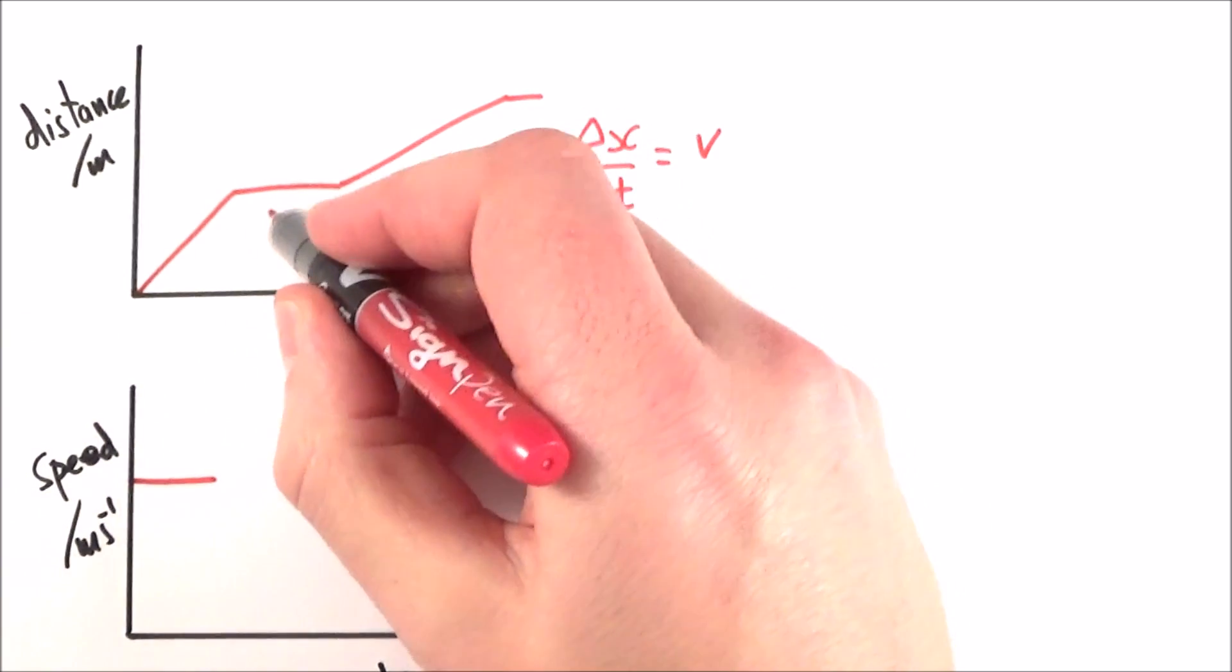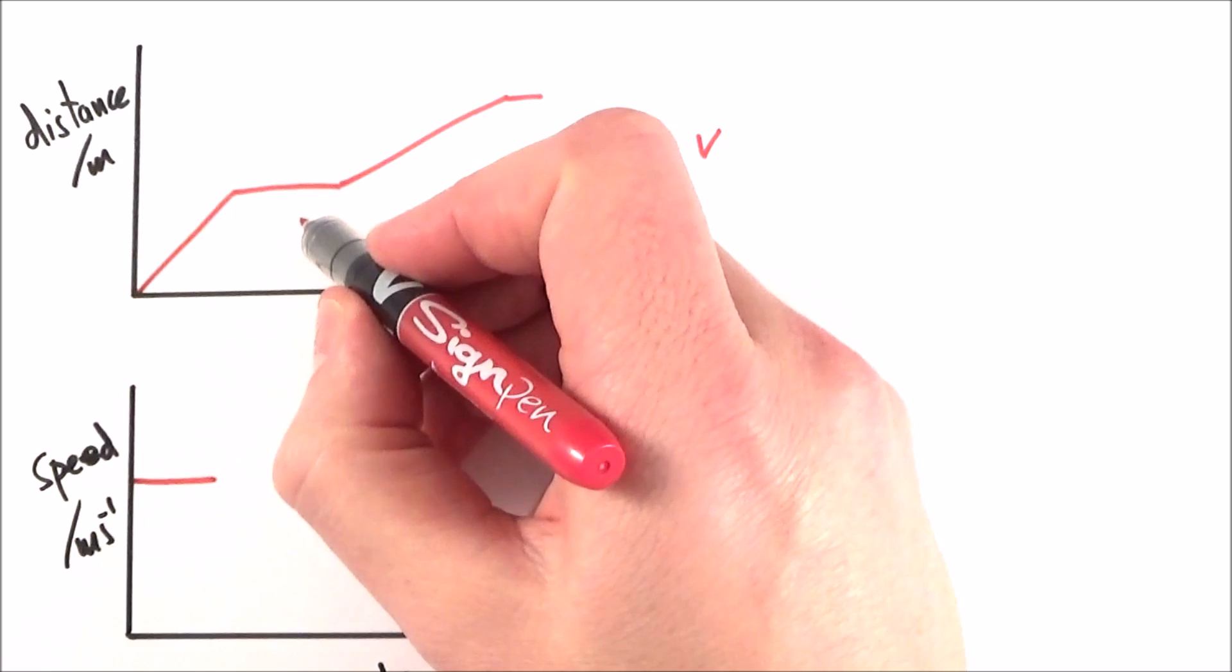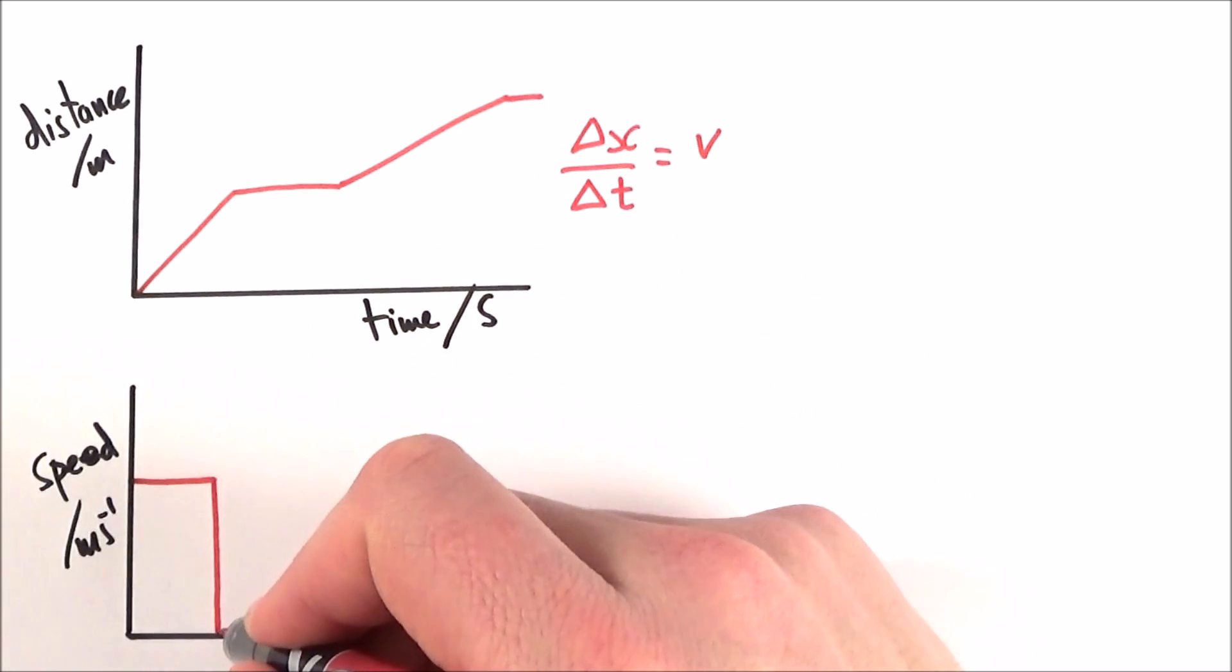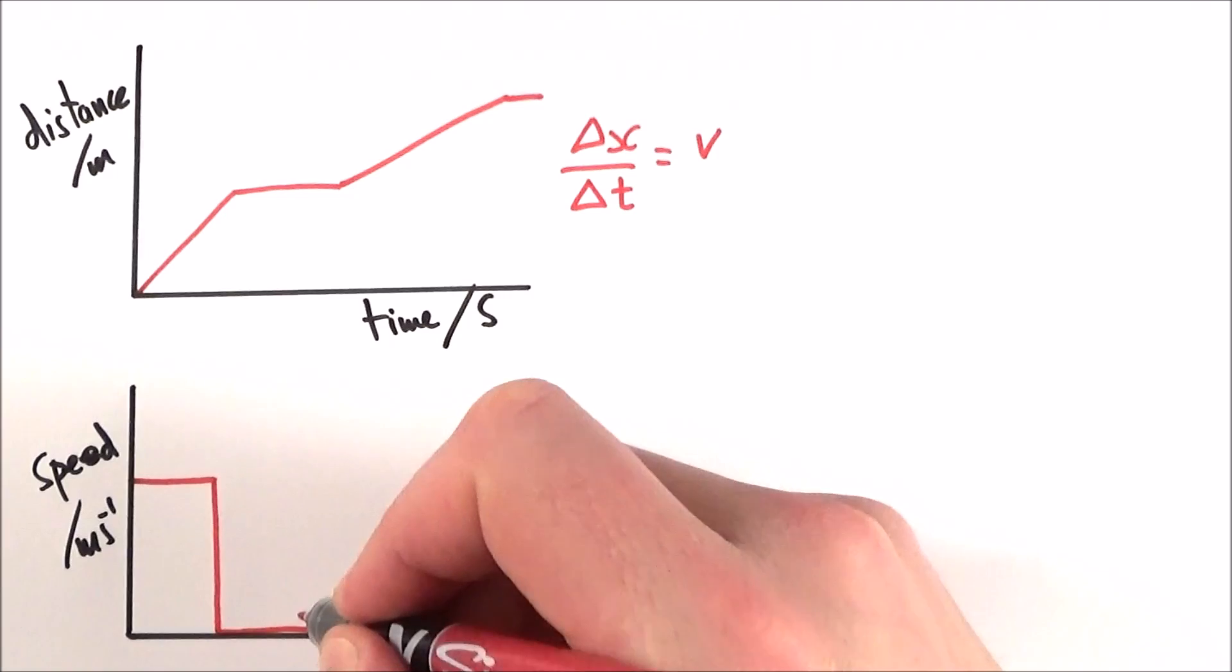It's then stationary because the gradient is zero, so it hasn't moved anywhere in this time. And this is the only time you can really get away with what looks a bit like a bar chart in physics.